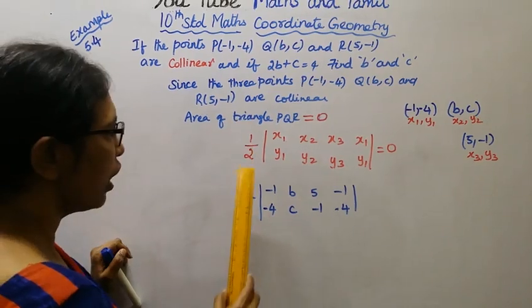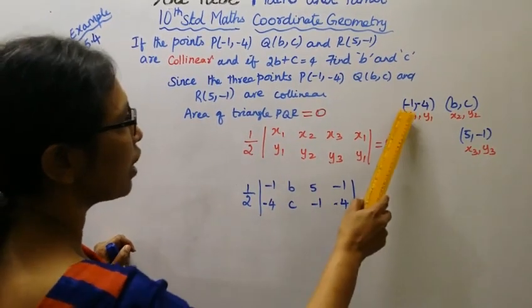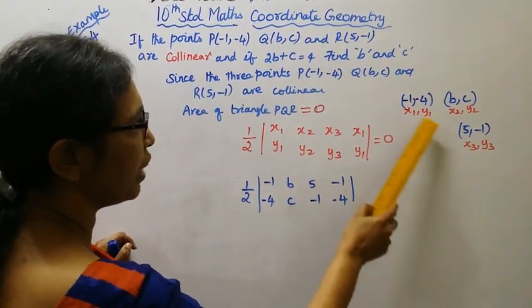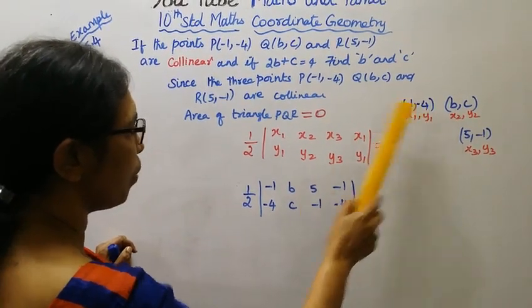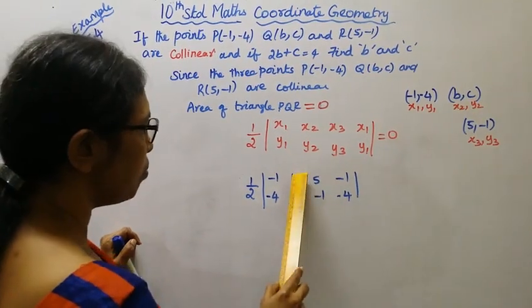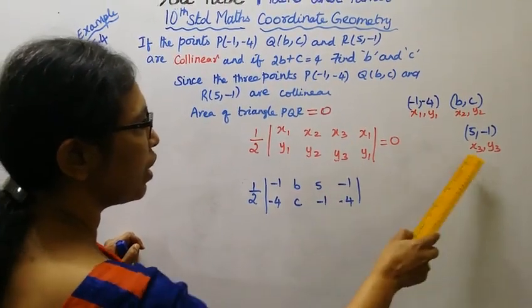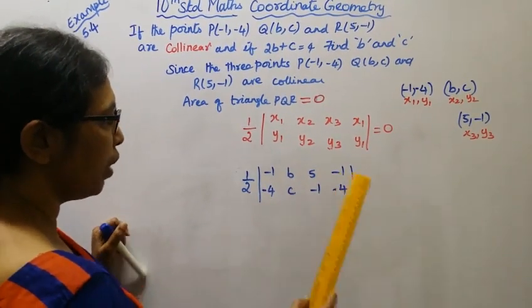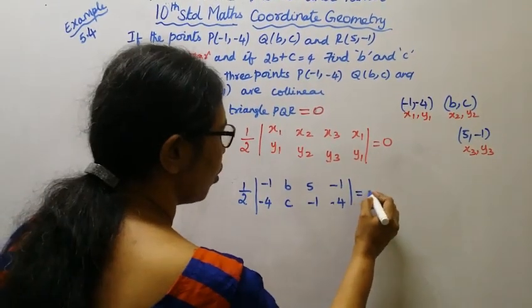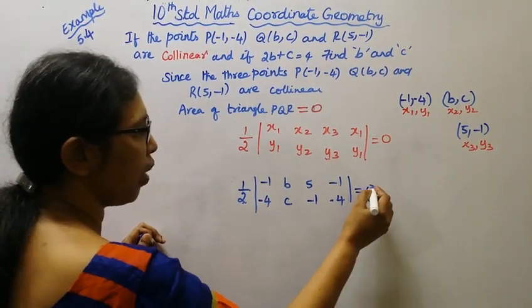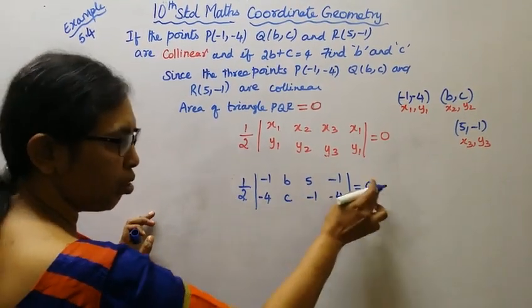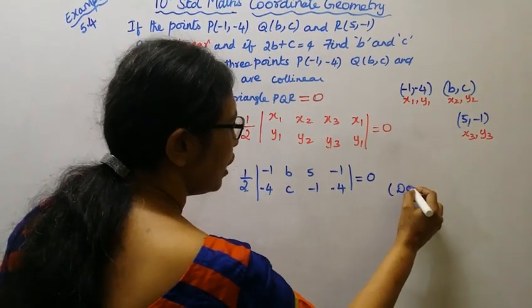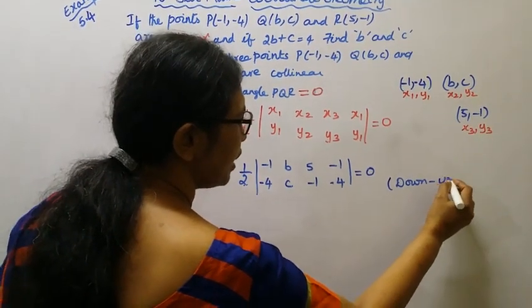So we set up: one-half times the area formula with P, Q, R. Here x1, y1 is P(-1, -4); x2, y2 is Q(B, C); and x3, y3 is R(5, -1). We write out the full determinant expression for the area.